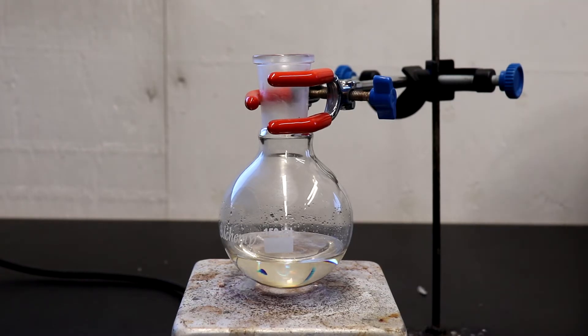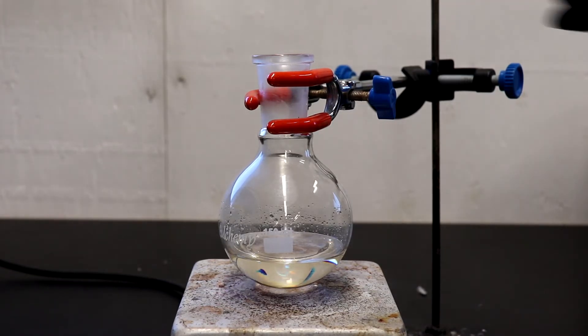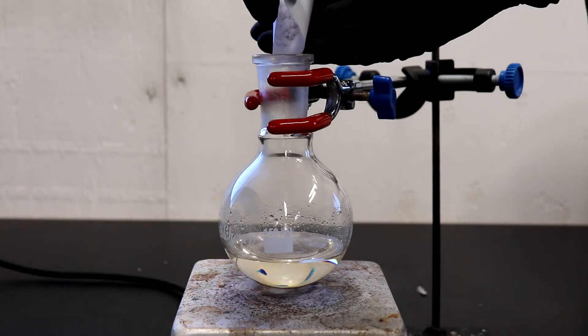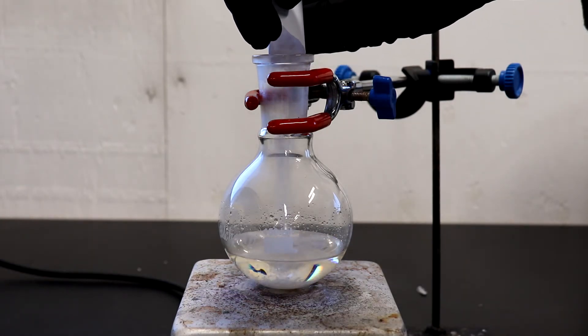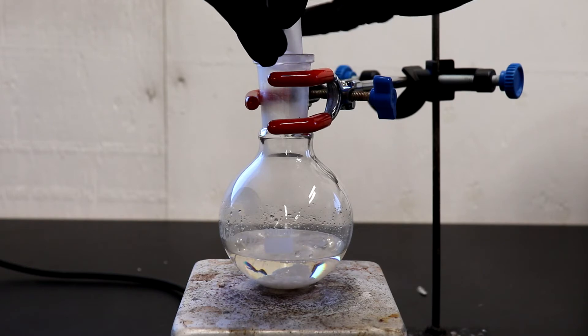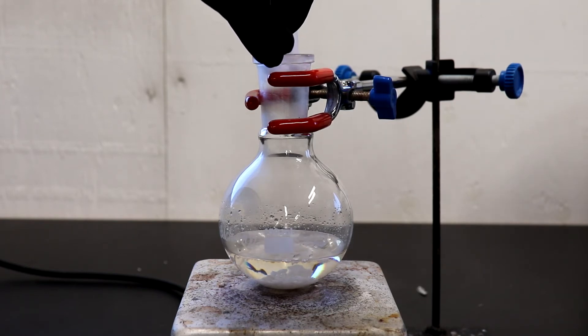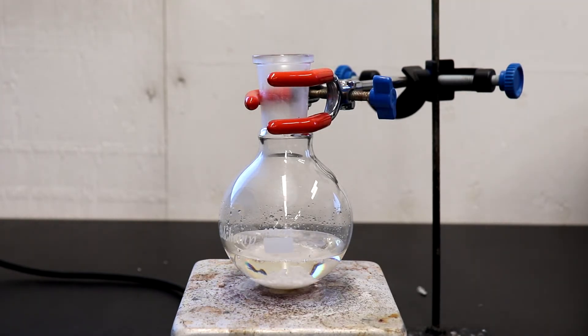Okay, and to the crude aniline I'm going to be adding 8.5 grams of potassium hydroxide. And I'm also going to be adding a stir bar.